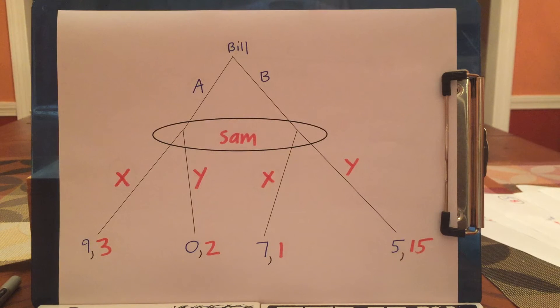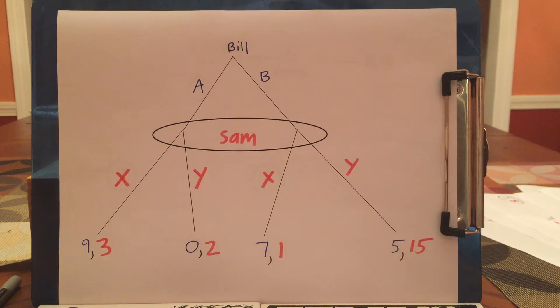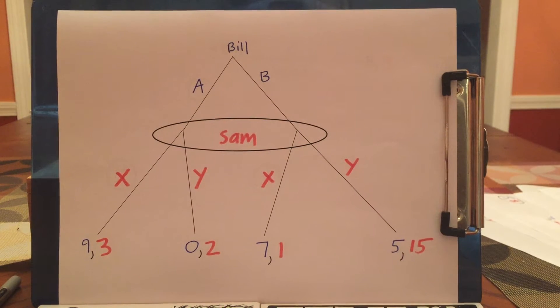Unfortunately, there's no way of figuring out what's going to happen in this game. Multiple things could happen. And if you draw this game, make it its equivalent in terms of a simultaneous move game, you'll see that there are multiple equilibria.